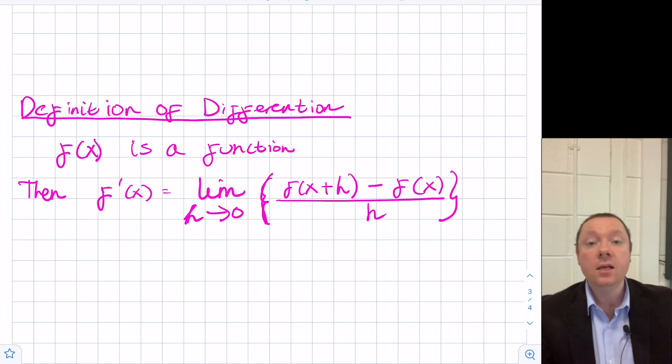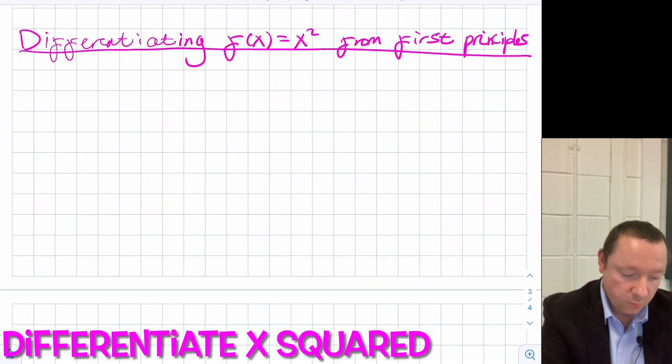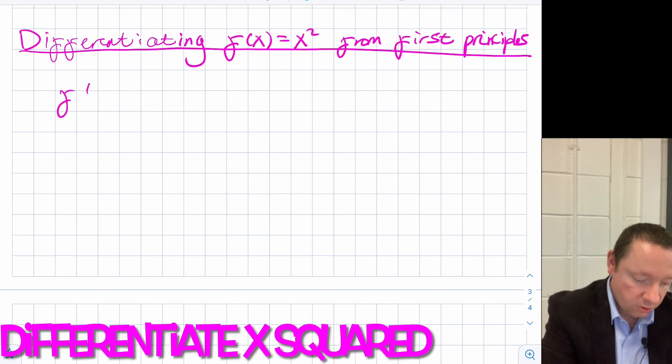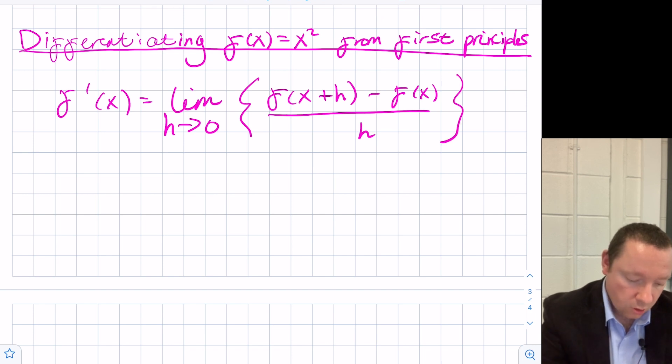And we can use that now to differentiate any function we want. Let's differentiate x squared and see what happens. So differentiating x squared from first principles, then f dash x, remember, is just going to be the limit as h goes to zero of f of x plus h minus f of x all over h. So plugging in our actual function, which is x squared, we get x plus h squared minus x squared over h.